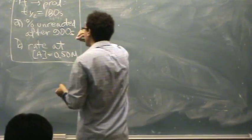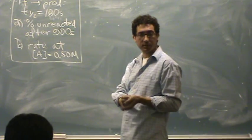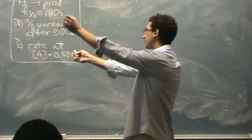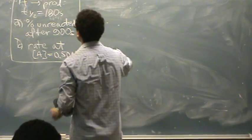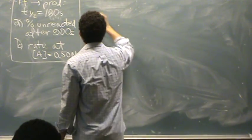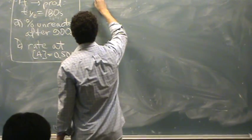So for A goes to products, and this is going to be a first order. If you didn't know that, it's always a good one to guess unless we tell you otherwise. Percent unreacted, let's write the first order rate law down.